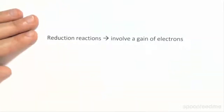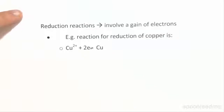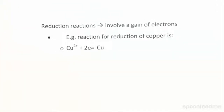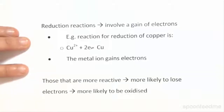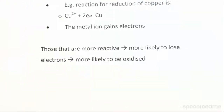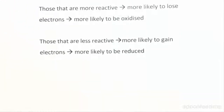Reduction reactions are those that involve a gain of electrons. For example, if we look at the reduction of copper, we see that the copper ion gains two electrons to form copper — so this metal ion gains electrons. When we look at the activity series, those that are more reactive are actually more likely to lose electrons and thus be oxidized, and vice versa — those that are less reactive are more likely to gain electrons and thus more likely to be reduced.